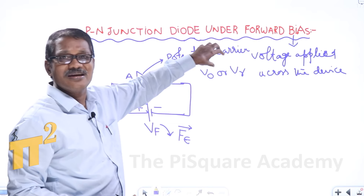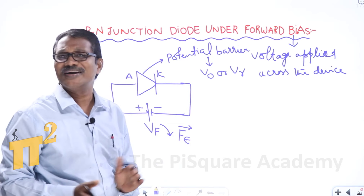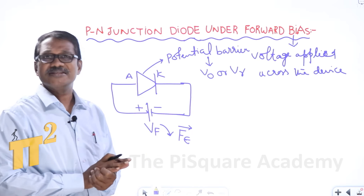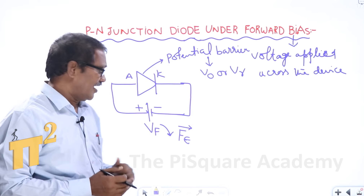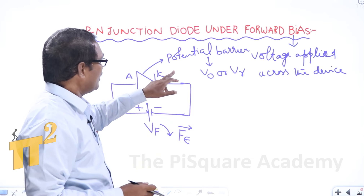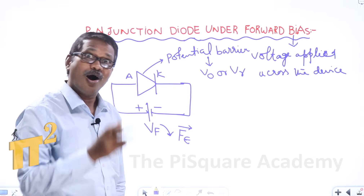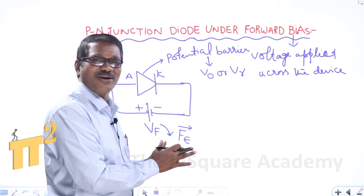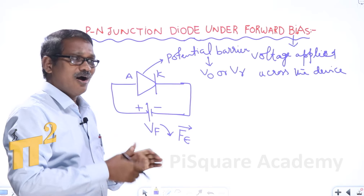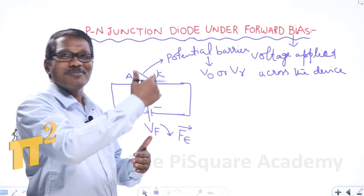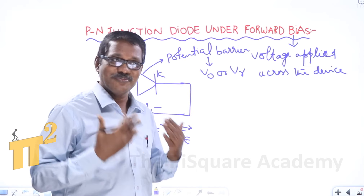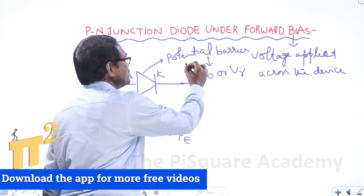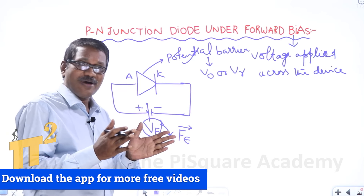No majority current will flow as long as the potential barrier exists. To move majority charge carriers through the P-N junction diode, an external voltage must be applied across it. The force due to the external potential is definitely opposite to the force due to the potential barrier. As a result, the strength of the potential barrier gets decreased, and the majority charge carriers move towards the junction.